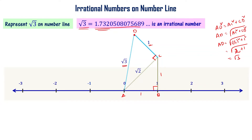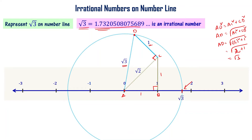Since AD = √3, I use the compass again with A as center and AD as radius, and draw an arc. The arc cuts the number line at a point, and that point represents √3. We have now successfully represented the irrational number √3 on the number line.